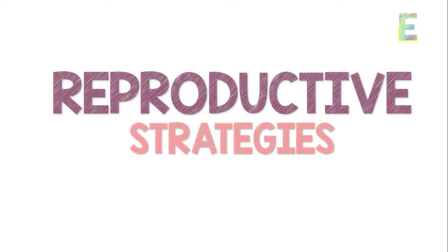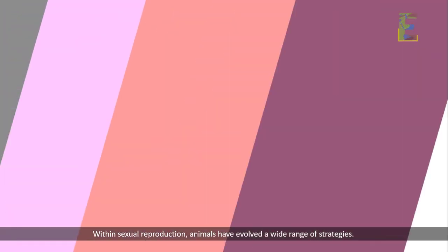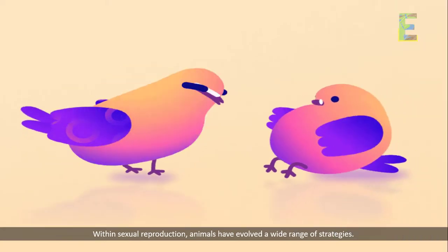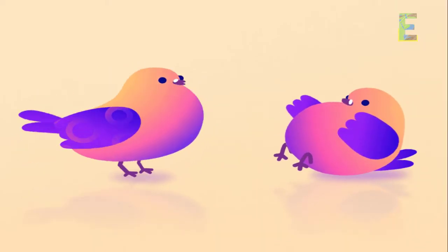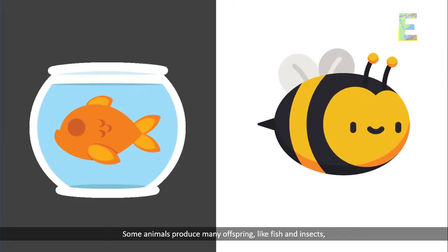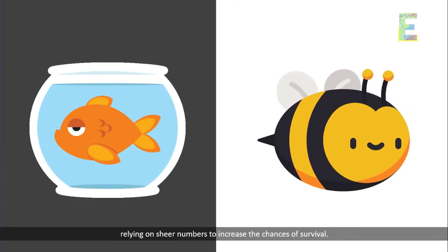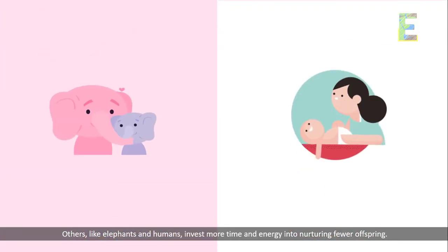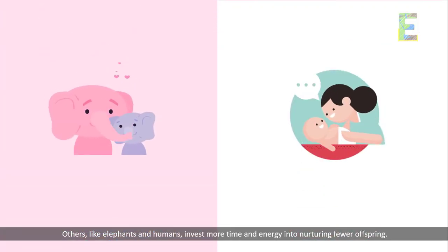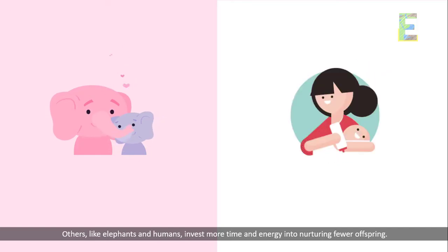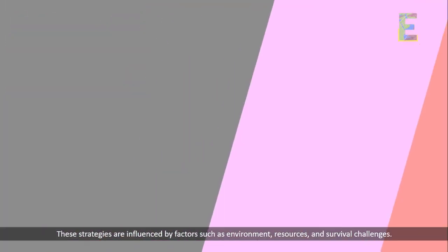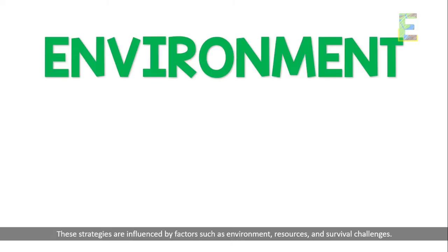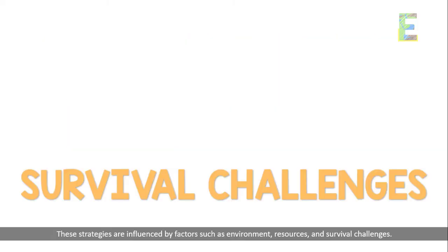Within sexual reproduction, animals have evolved a wide range of strategies. Some animals produce many offspring, like fish and insects, relying on sheer numbers to increase the chances of survival. Others, like elephants and humans, invest more time and energy into nurturing fewer offspring. These strategies are influenced by factors such as environment, resources, and survival challenges.